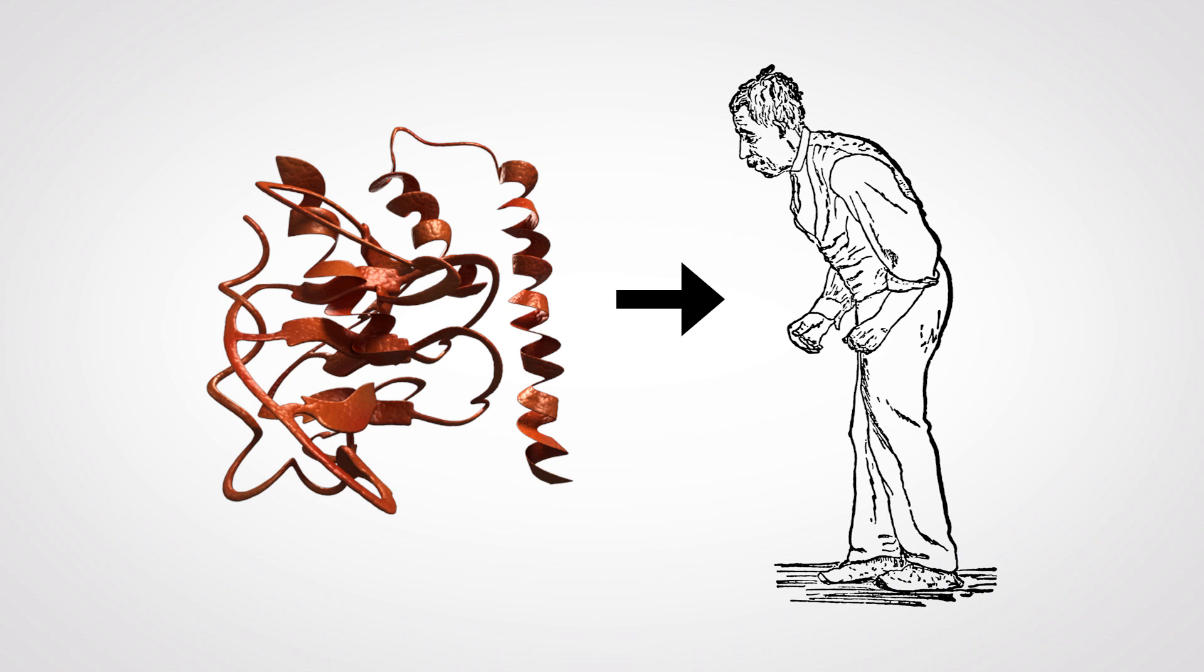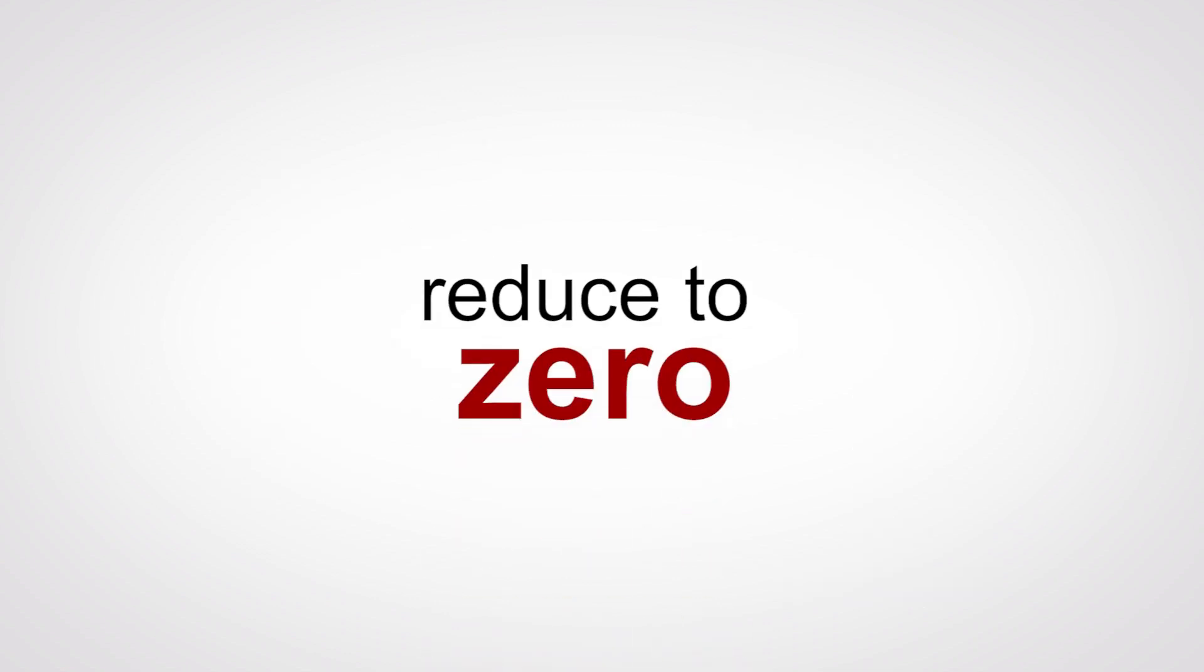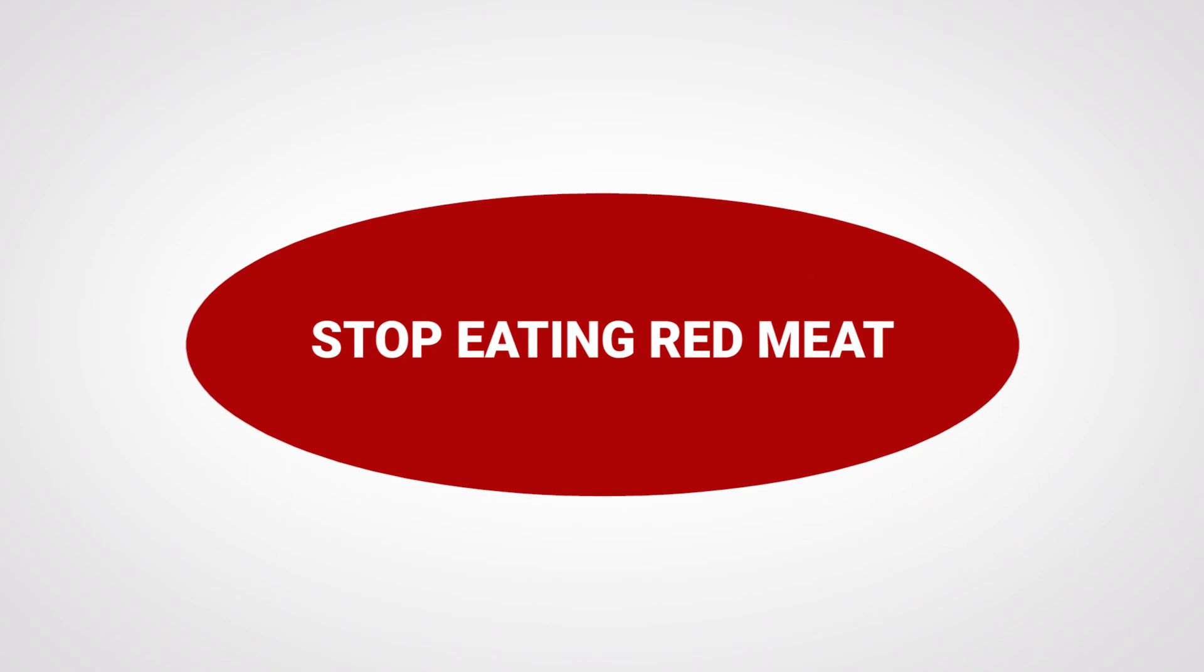There is, however, some very good news. You can reduce to almost zero your chance of getting the dreaded prion diseases. All you have to do is stop eating red meat and red meat products.